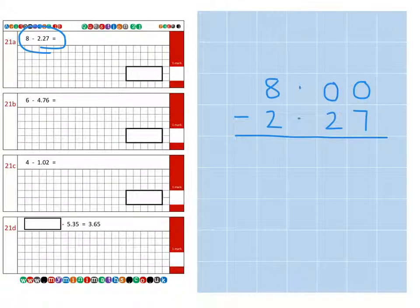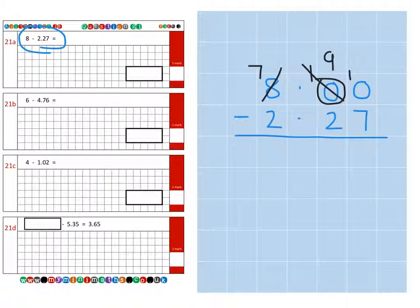So first of all, we can't borrow from the zero here, can't borrow from this zero, but we can go all the way over to our units column and borrow a unit from here and bring it back to our tenths. Then we can borrow from our ten tenths to make it nine tenths and bring it over to the hundredths, and then we can complete the calculation.